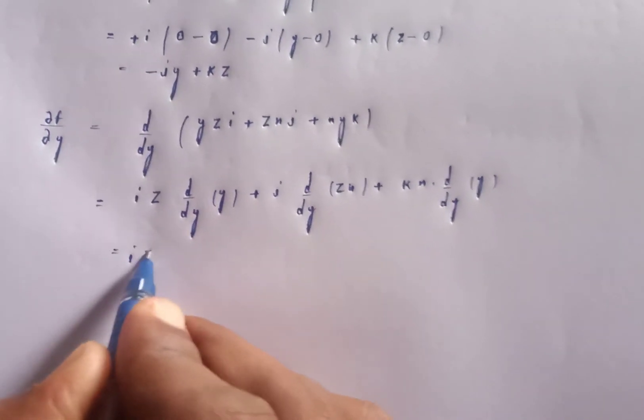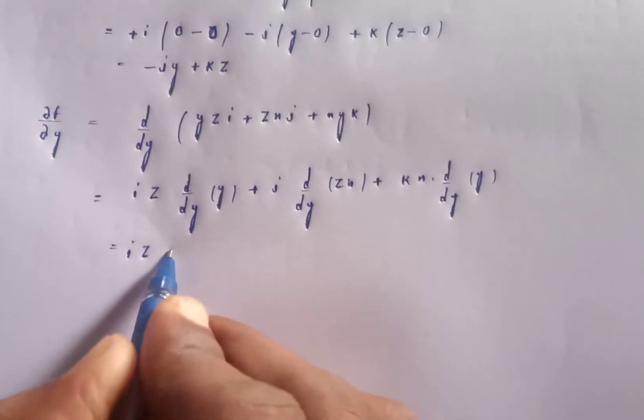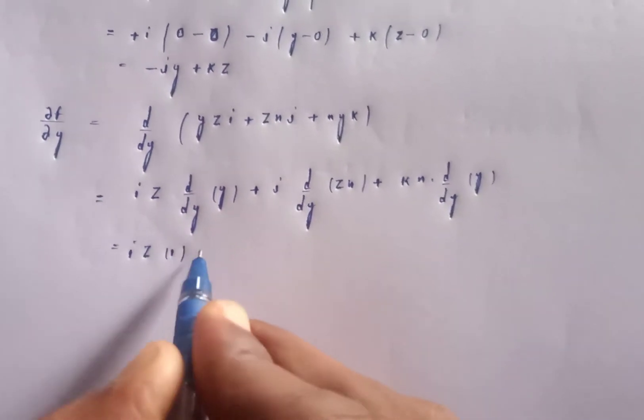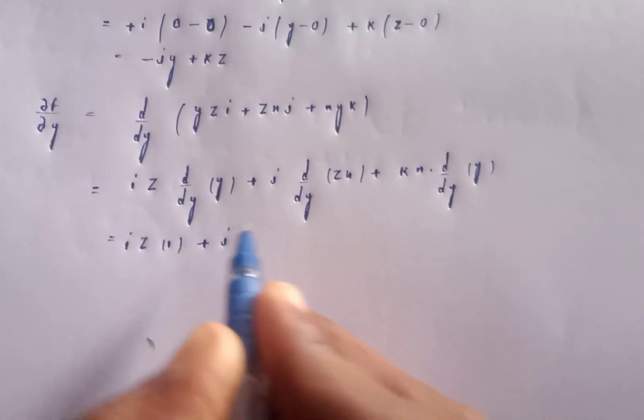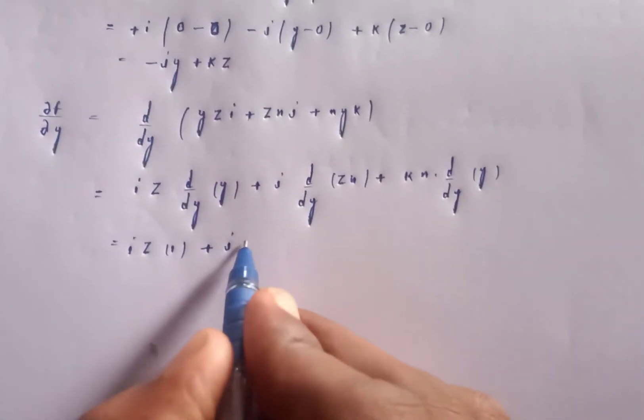So ∂f/∂y: the i component gives value 1 times z, meaning iz, plus j of zero with respect to y.